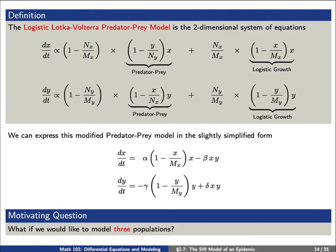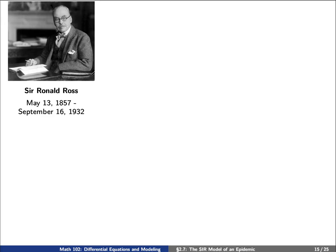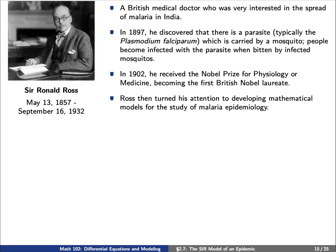The story for today begins with the British medical doctor Sir Ronald Ross. He was very interested in the spread of malaria in India. In 1897, he discovered that there is a parasite, typically called Plasmodium falciparum, which is carried by a mosquito. People become infected with the parasite when bitten by the infected mosquitoes. In 1902, he received the Nobel Prize for Physiology or Medicine, becoming the first British Nobel laureate. Ross then turned his attention to developing mathematical models for the study of malaria epidemiology.